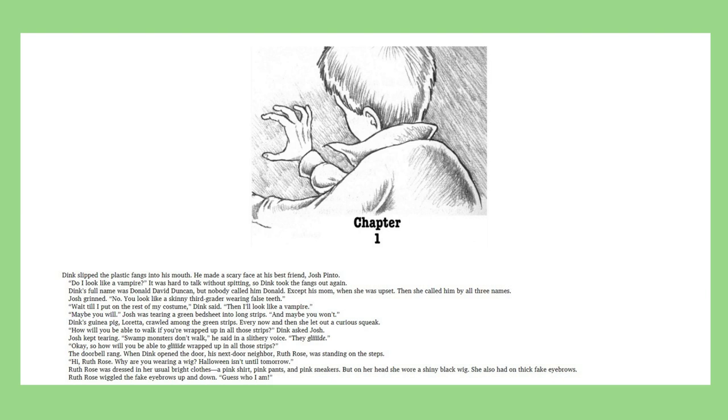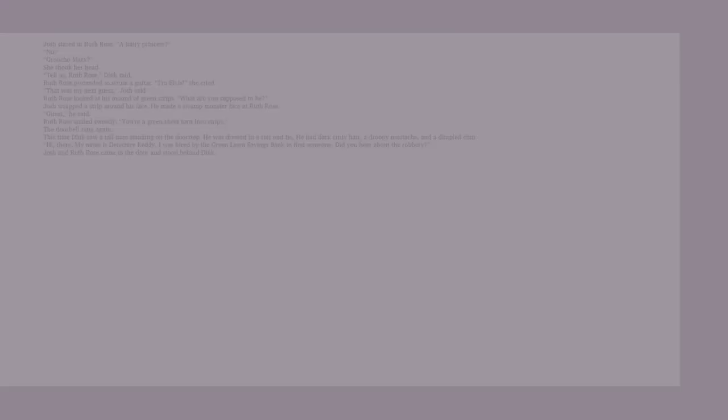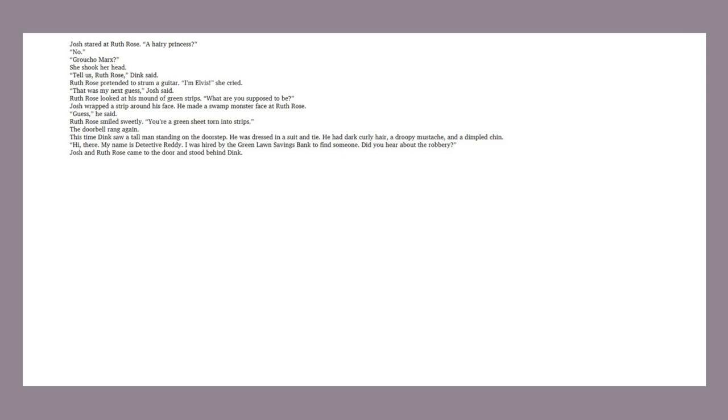The doorbell rang. When Dink opened the door, his next-door neighbor, Ruth Rose, was standing on the steps. Hi, Ruth Rose. Why are you wearing a wig? Halloween isn't until tomorrow. Ruth Rose was dressed in her usual bright clothes. A pink shirt, pink pants, and pink sneakers. But on her head, she wore a shiny black wig. She also had on thick fake eyebrows. Ruth Rose wiggled the fake eyebrows up and down. Guess who I am. Josh stared at Ruth Rose. A hairy princess? No. Groucho Marx. She shook her head. Tell us, Ruth Rose. Dink said. Ruth Rose pretended to strum a guitar. I'm Elvis! she cried.